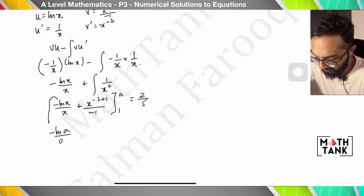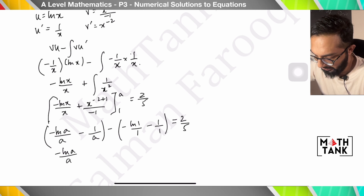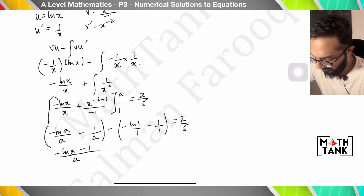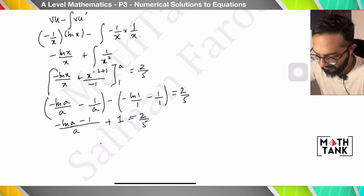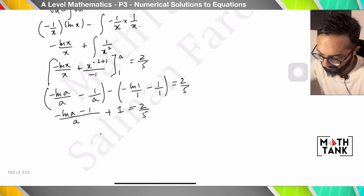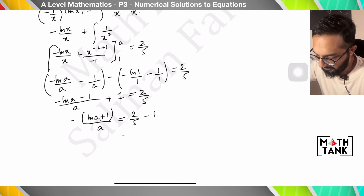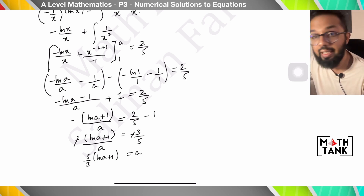Applying the limits: upper limit gives −(ln a)/a − 1/a; lower limit gives −(ln 1)/1 − 1/1 = 0 − 1 = −1. So we get [−(ln a)/a − 1/a] − (−1) = 2/5. Combining over a common denominator: (−ln a − 1 + a)/a = 2/5, giving −ln a + a + 1 = 2/5 × ... rearranging, factoring out a negative, we get (ln a + 1)/a on one side. Taking the reciprocal gives a = (5/3)(ln a + 1) — the required result.